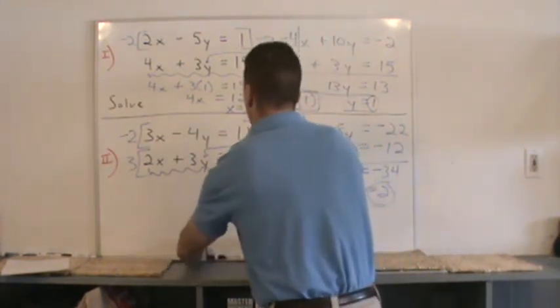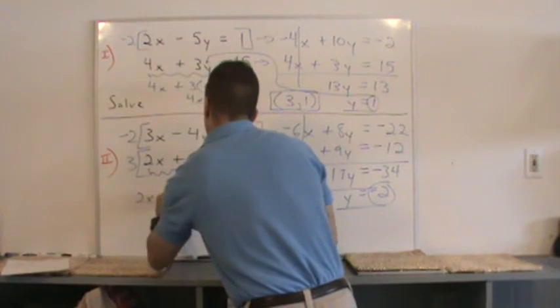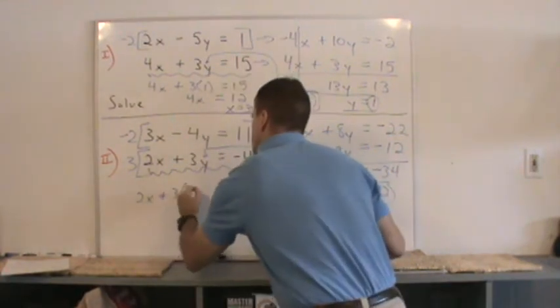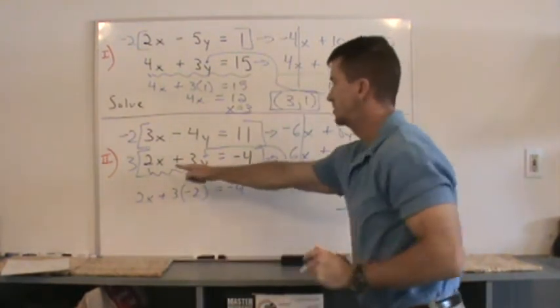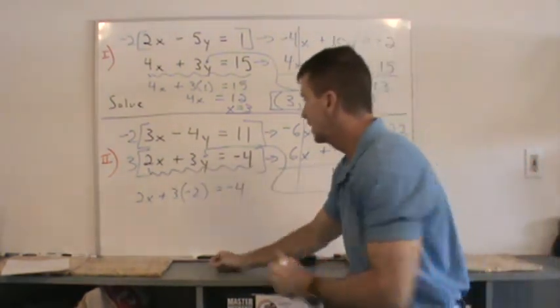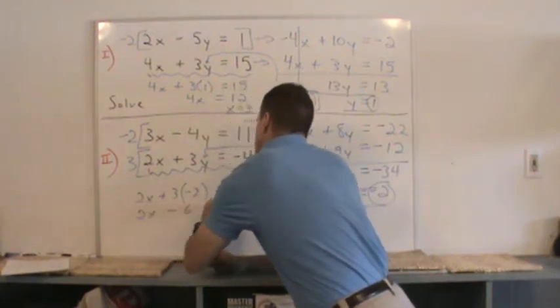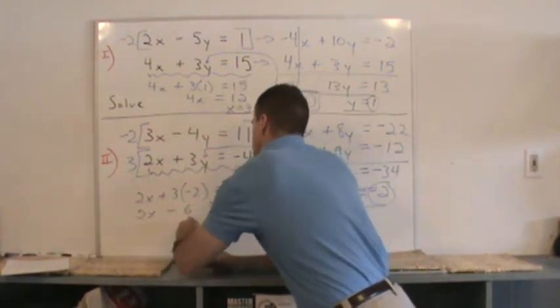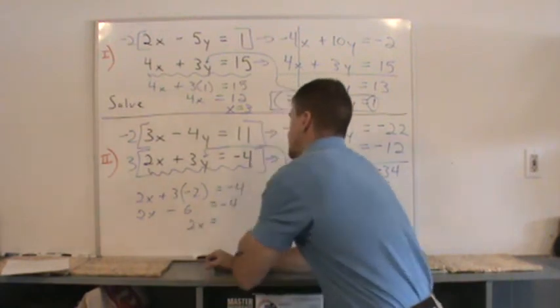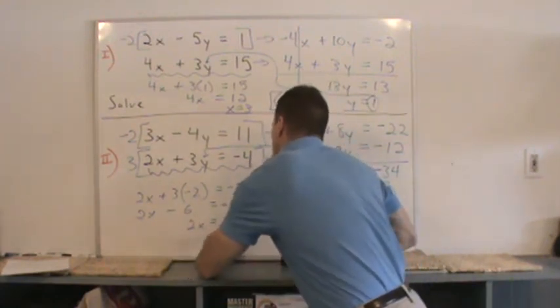I now get 2x plus 3 times negative 2 equal to negative 4. I'm using this equation right here, even without the 3 you multiply it to it. And I get 2x minus 6 equals negative 4. Add 6 on both sides. You get 2x equals 2. And therefore, x equals 1.